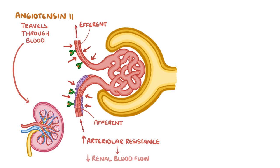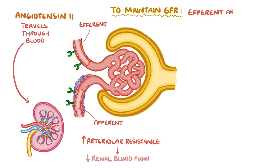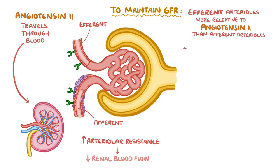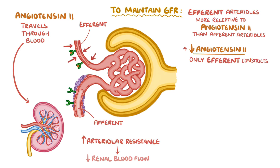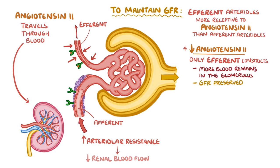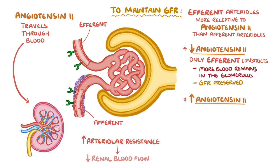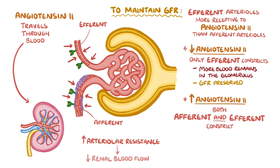However, there's a mechanism to ensure that even when less blood gets to the kidneys, the glomerular filtration rate remains constant. The efferent arterioles are much more responsive to angiotensin 2 than the afferent arterioles. So at low levels of angiotensin 2, only the efferent arterioles constrict, making more blood remain in the glomerulus and thereby preserving the GFR. However, at high levels of angiotensin 2, both afferent and efferent arterioles constrict, decreasing both renal blood flow and GFR.